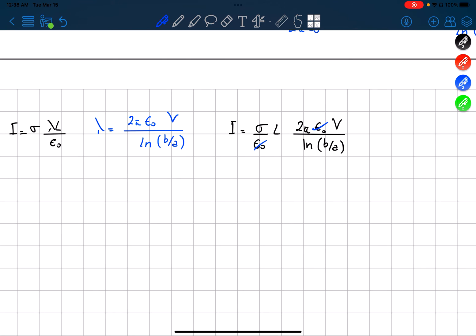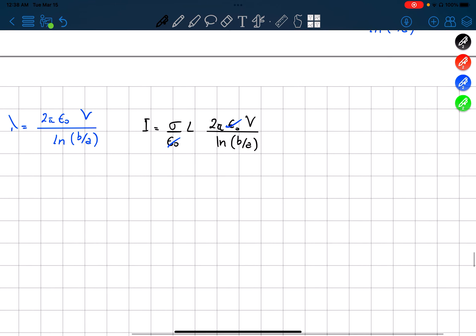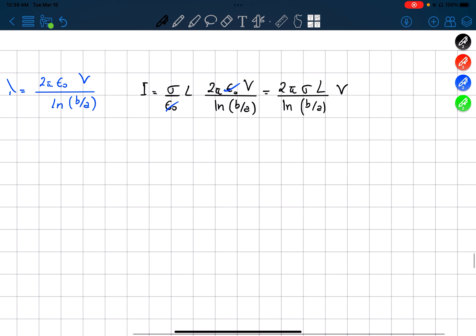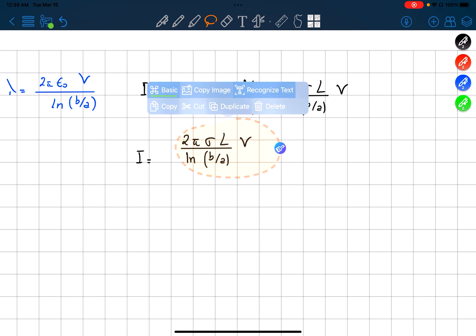We get that the current is equal to the constant, the conductivity constant, times, actually I want to start with 2π, conductivity constant times the length over ln of B over A times V. Or let me write this in a more compact form, this part over here.